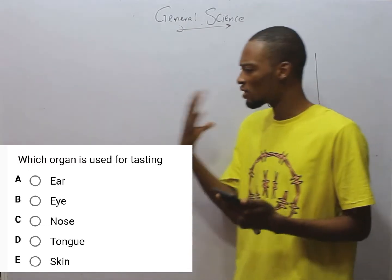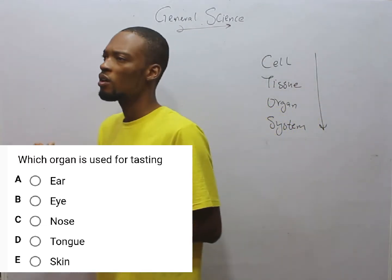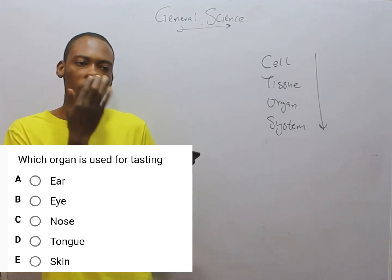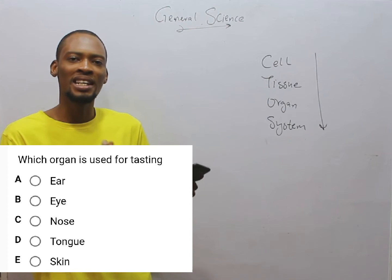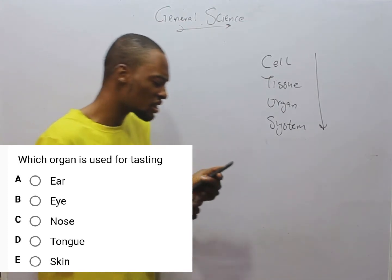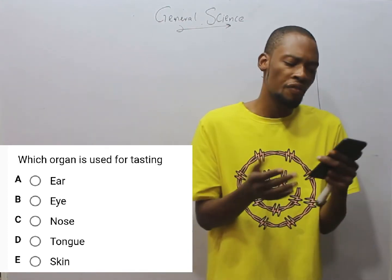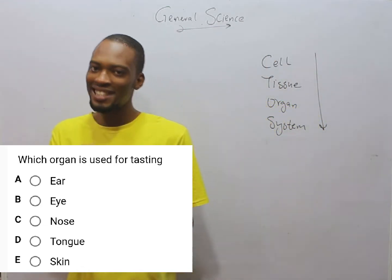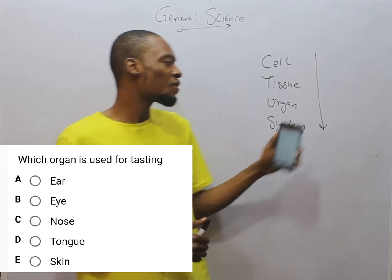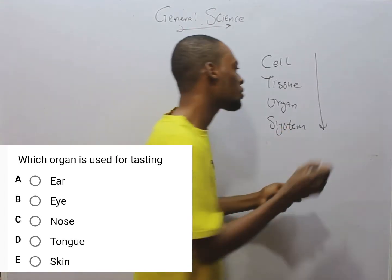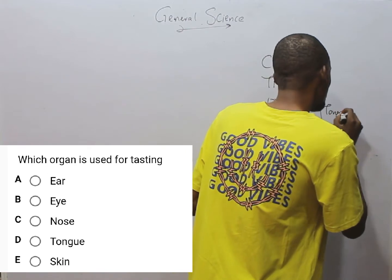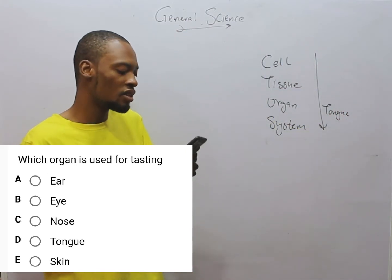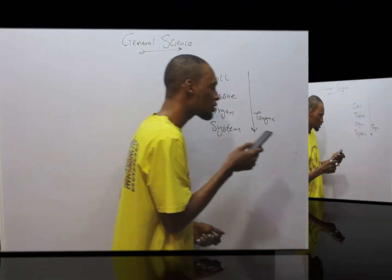In the body we have what are referred to as sense organs — they are used for sensing. For example, the ear for hearing, the eyes for sight, and the nose for inhaling. This question asks which organ is used for tasting. Ladies and gentlemen, you will agree with me that the organ used for tasting is the tongue. So the tongue is the organ for tasting, which means option D is the correct option.